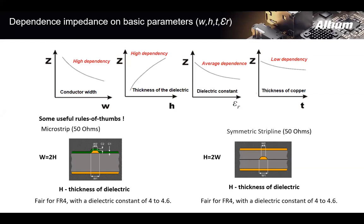And here are some useful rules of thumb that the industry has used for years. With a microstrip, again, that conductor being on the outside, having a return path of a plane underneath of it, separated by dielectric, if the width of that trace is two times the height of the dielectric, for FR4, you can be basically assured that you've got a nice 50 ohm line there. Similarly, if you're using a symmetric strip line approach, the height of the dielectric would need to be two times the width of the conductor. And for FR4 with a dielectric constant of 4 to 4.6, that would give you 50 ohms.